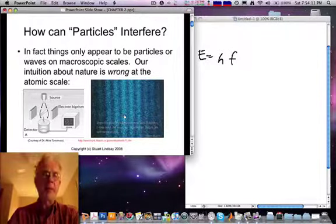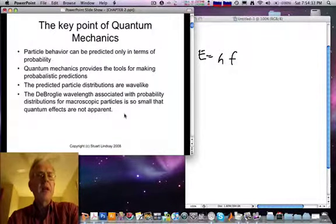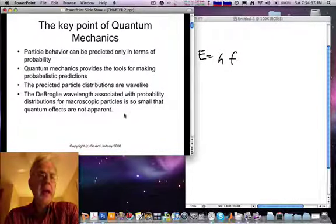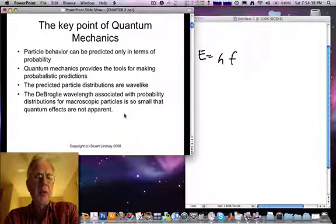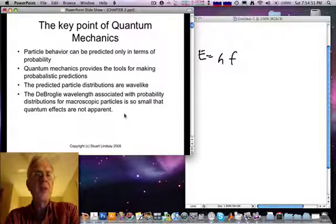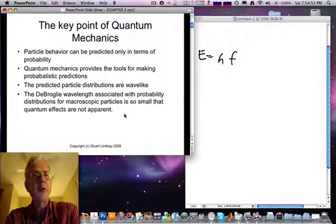So here are some of the key points of quantum mechanics. Unlike classical mechanics, where once you know the starting position and velocity of a particle, you can, from Newton's laws, predict its behavior at any future time, in quantum mechanics you can only make probabilistic predictions of the most likely position for finding a particle.